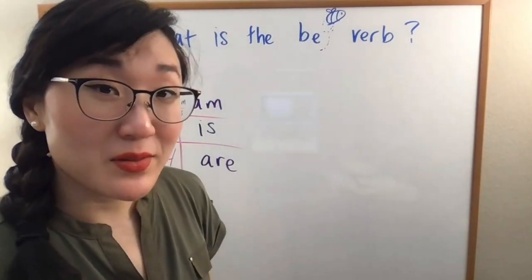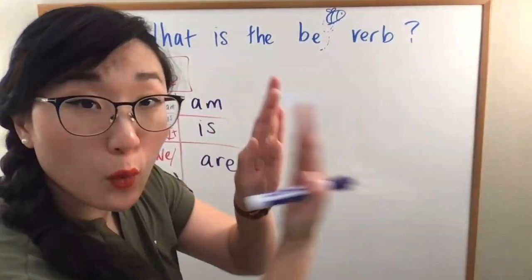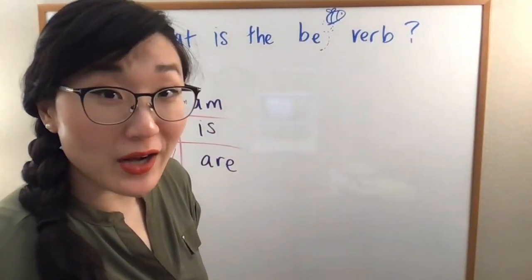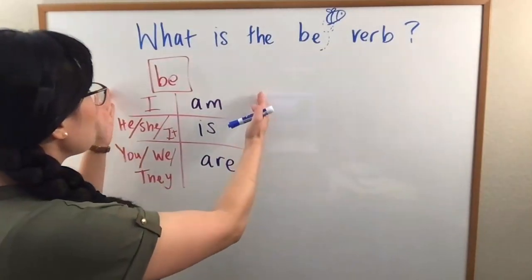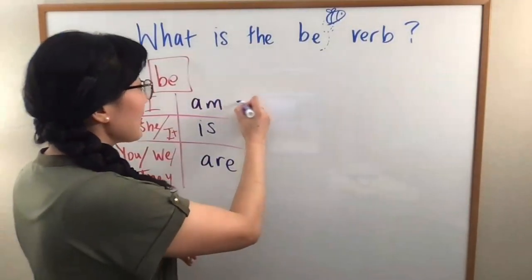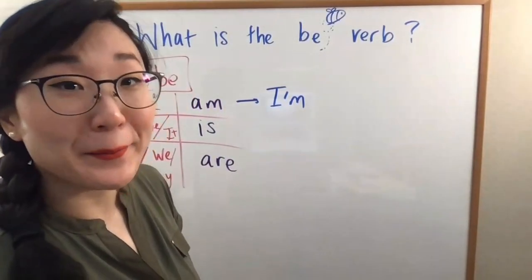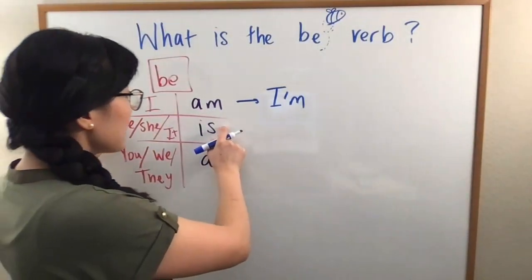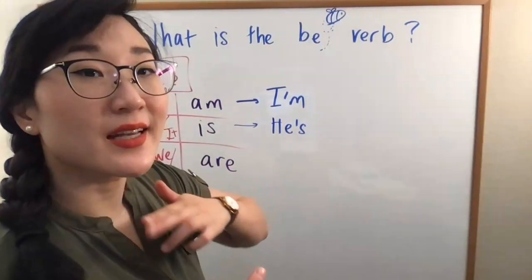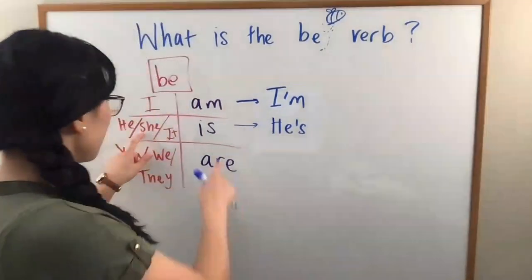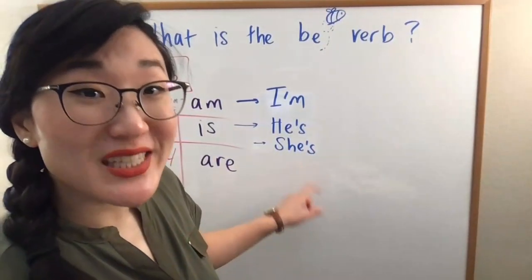So, sometimes you may hear an American say this in a shorter way. We call this a contraction. You don't need to remember that word. But, how does this look when we combine it together? I am becomes I'm. I'm. He is becomes he's.